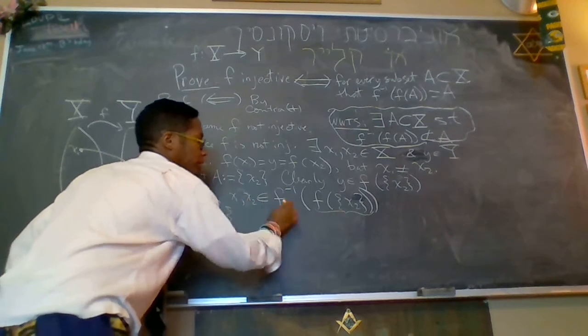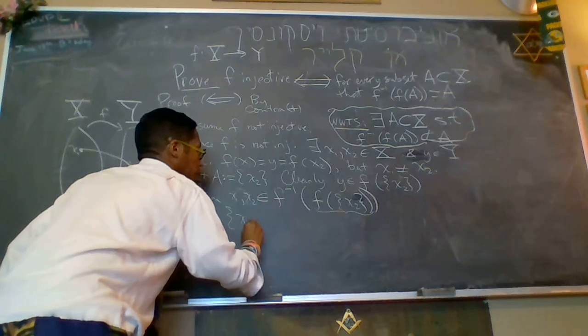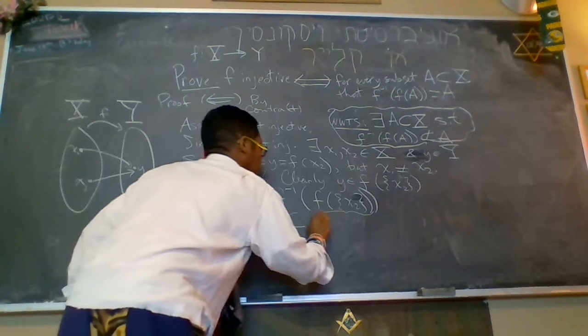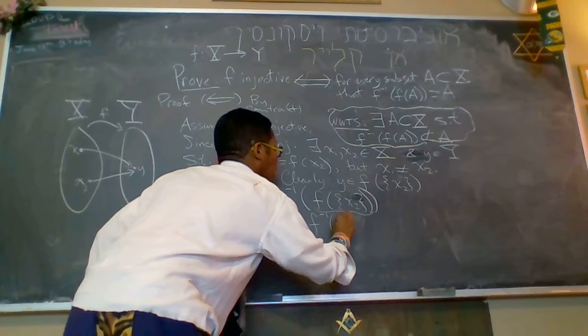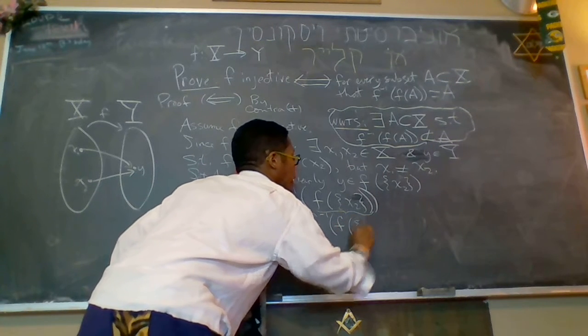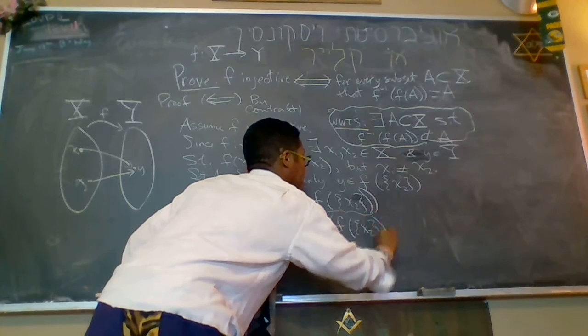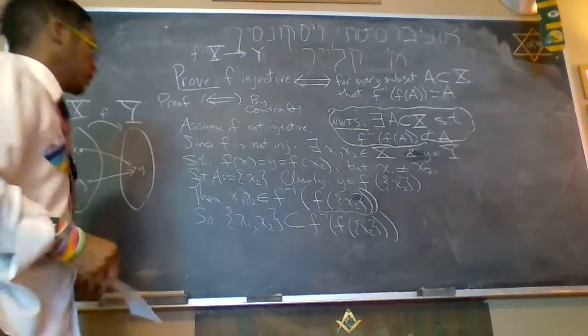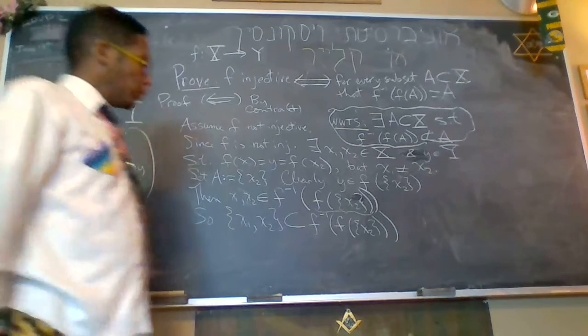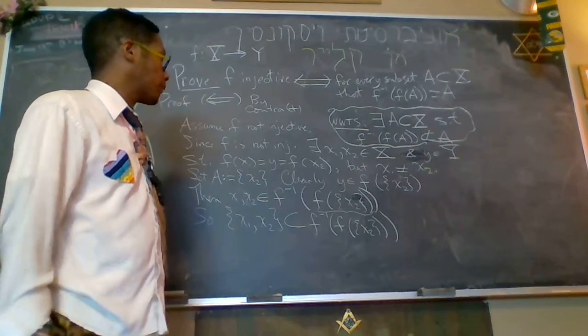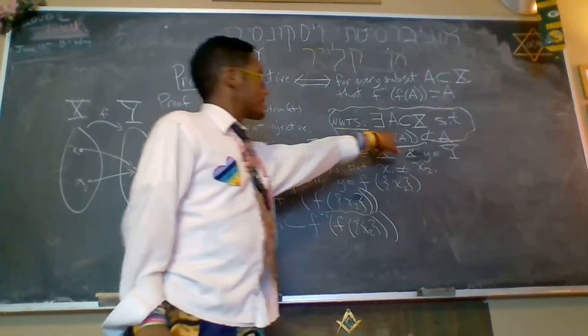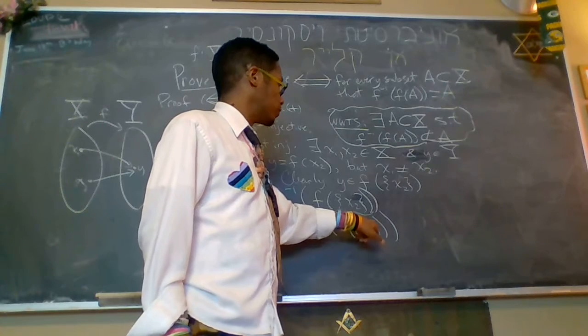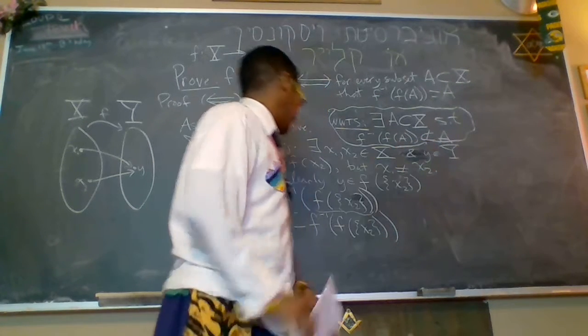So since these are elements of the set, x1, x2 is a subset of the inverse image of x2. So if it were the case, then that's the inverse image of the image of the set of x2, which is our a, is in fact a subset of a.